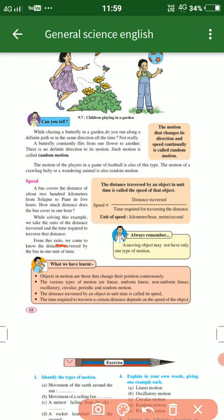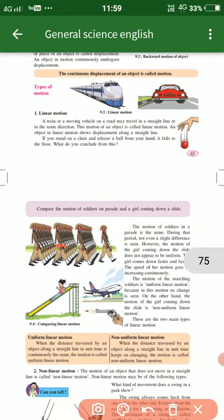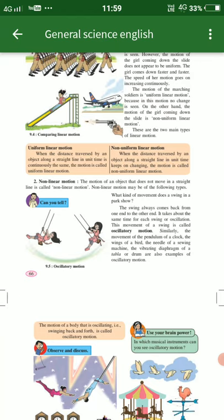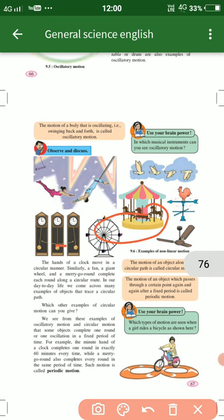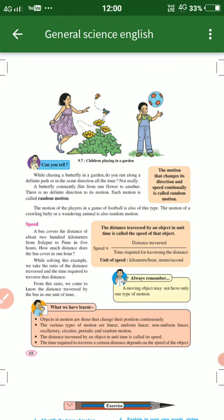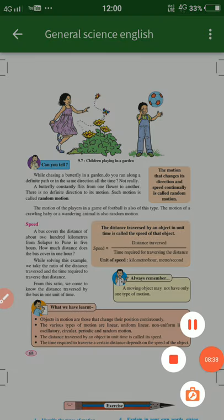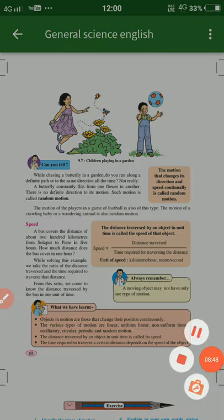There are two types of motion: first is linear motion and second is non-linear motion. Non-linear motion also has two types: oscillatory motion and circular motion. Circular motion is also called periodic motion. After that comes speed — the distance traveled divided by the time consumed. Here we end our chapter. Thank you for watching. Please revise this, and I will give you notes of this chapter in our next lecture.